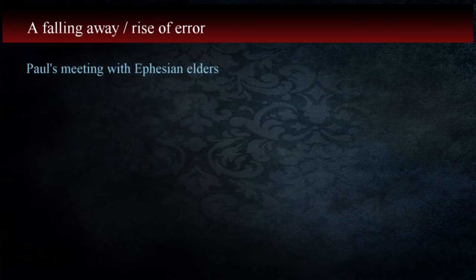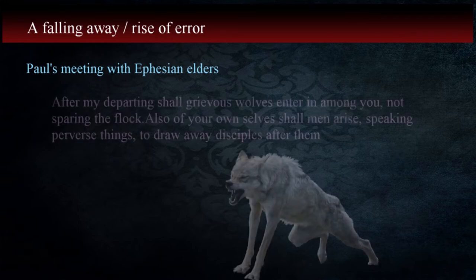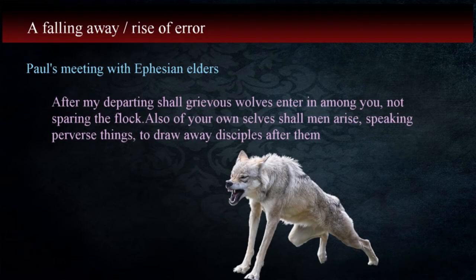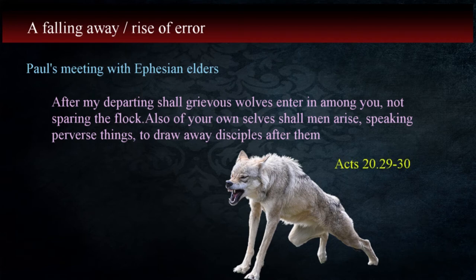On his way to Jerusalem, following his third preaching trip, Paul met with the Ephesian elders at Miletus and warned them that, 'After my departing, shall grievous wolves enter in among you, not sparing the flock; also of your own selves shall men arise, speaking perverse things, to draw away disciples after them,' in Acts 20:29-30.